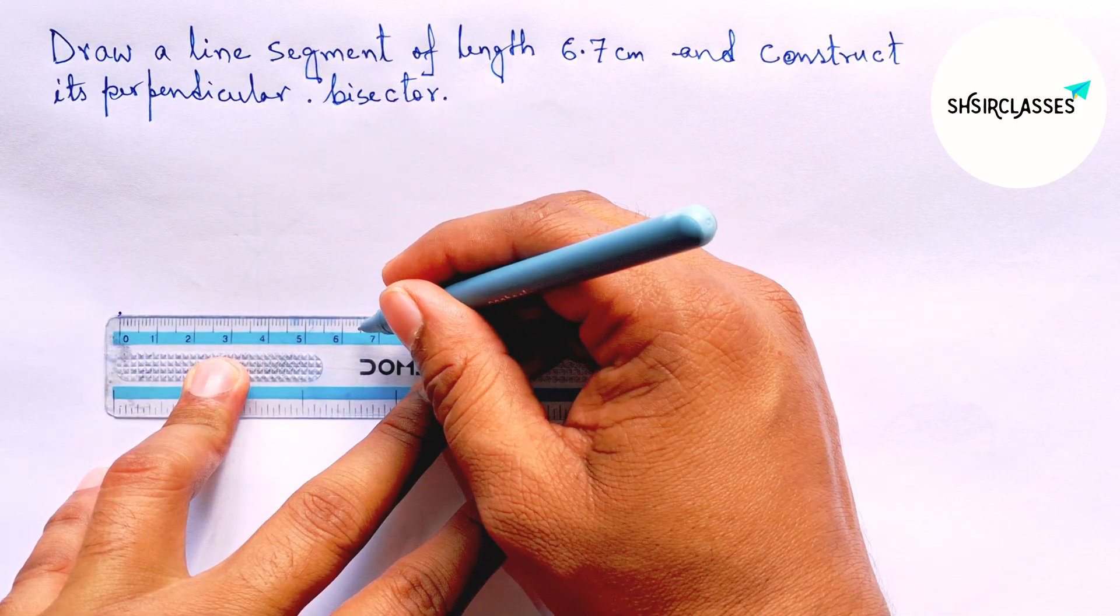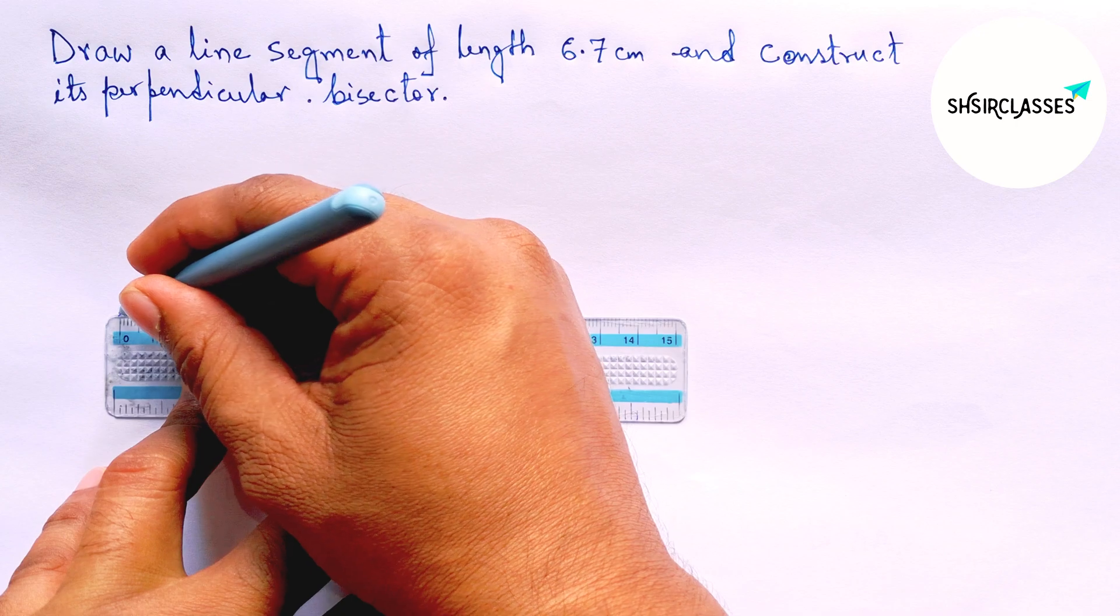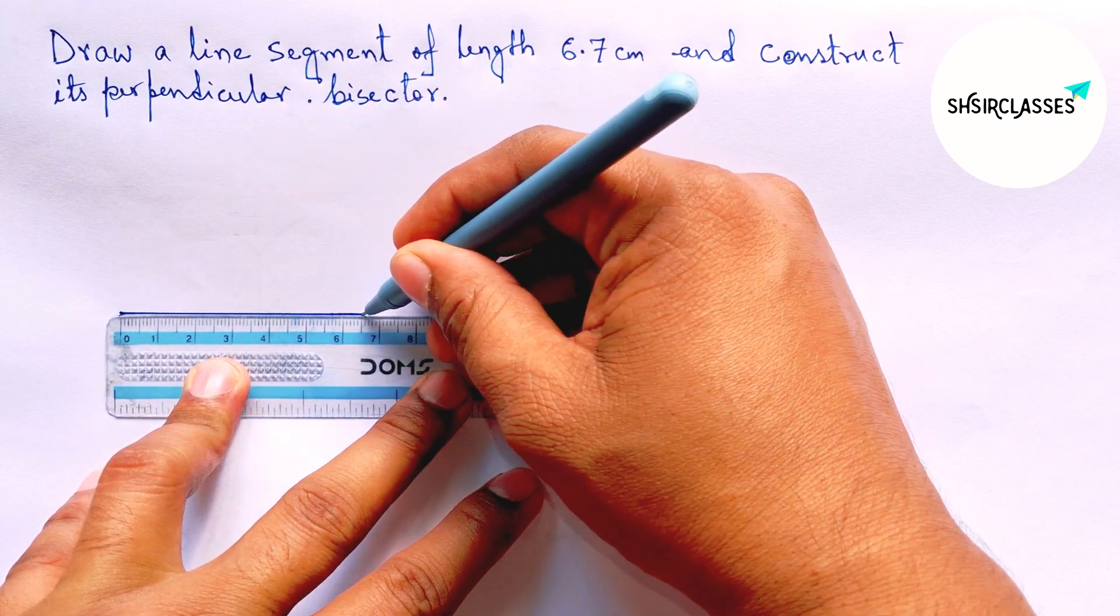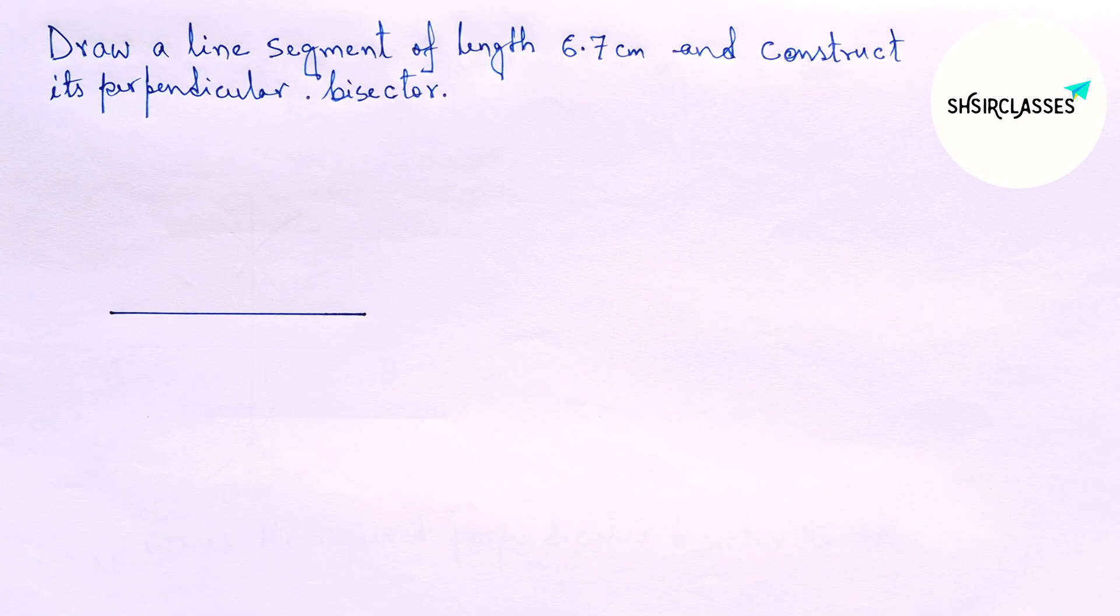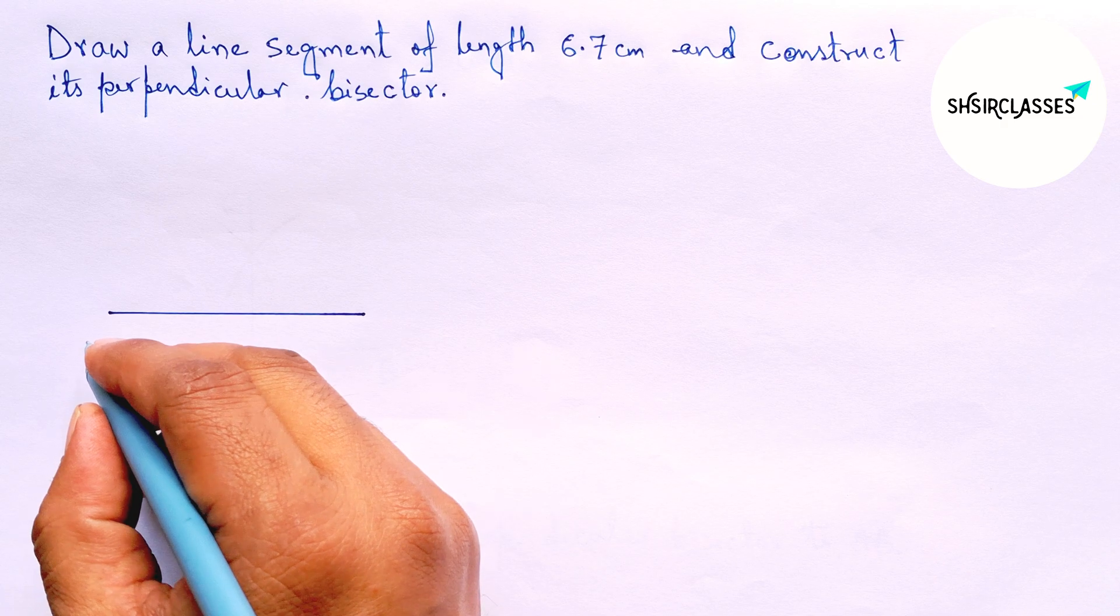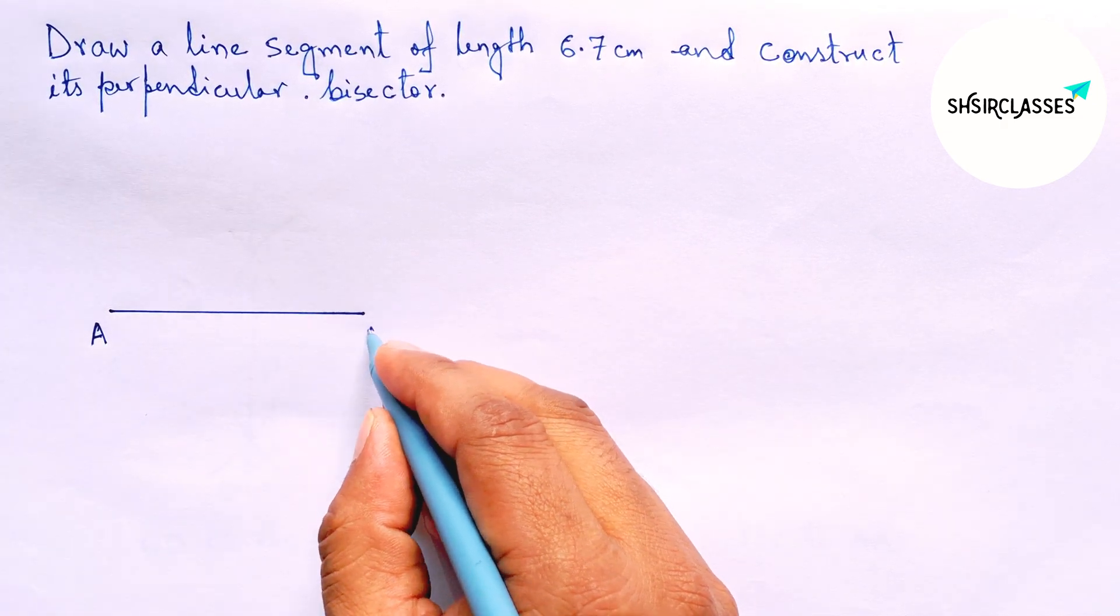So here's 6, 6.5, and 7. This is a 6.7 cm line segment. Label it A and B.